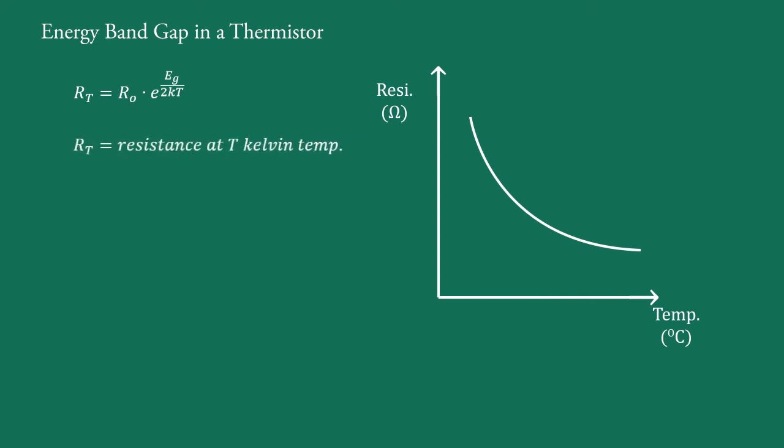Here RT is the resistance at T kelvin temperature, R0 is the resistance at zero kelvin temperature, Eg is the energy band gap (that is, energy difference between the filled valence band and empty conduction band of the particular semiconductor), and k is the Boltzmann's constant. Thus, measurement of the resistance of the thermistor as a function of temperature provides data from which the energy band gap can be determined.